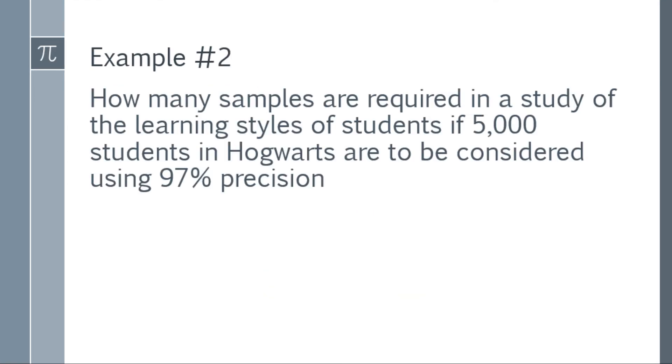Okay, so let's go to example number two. How many samples are required in a study of the learning styles of students if 5,000 students in Hogwarts are to be considered using 97% precision? Same number of students as earlier, which is 5,000. Now what changed is using 97% precision.